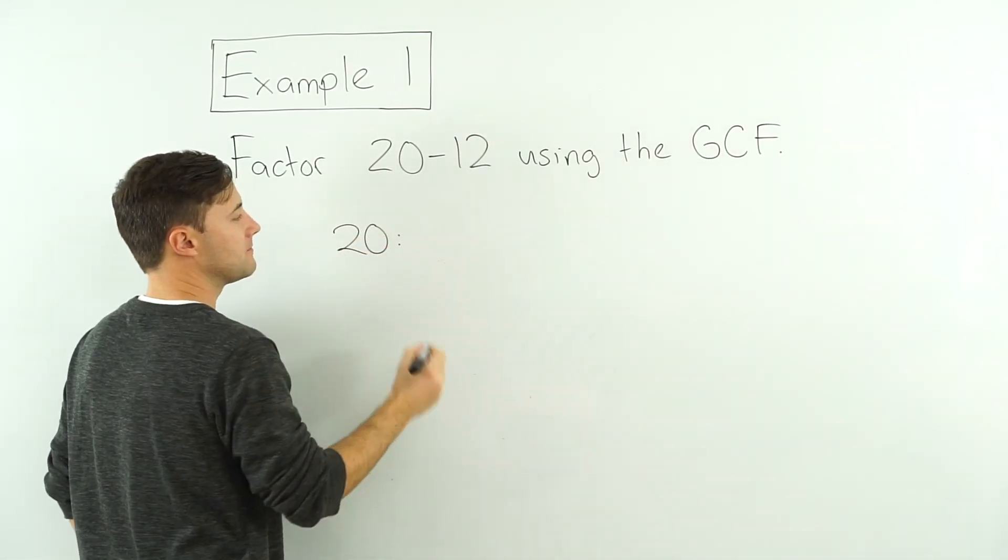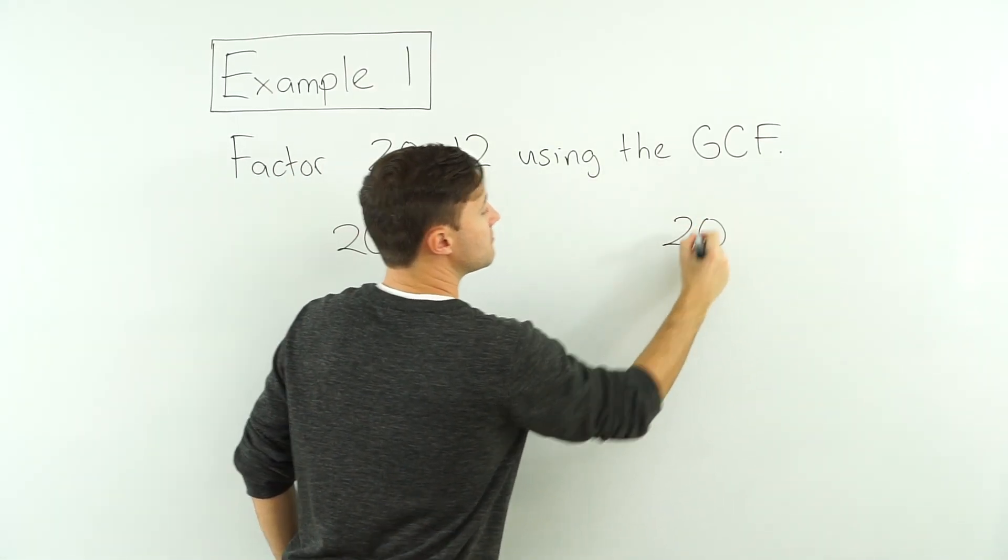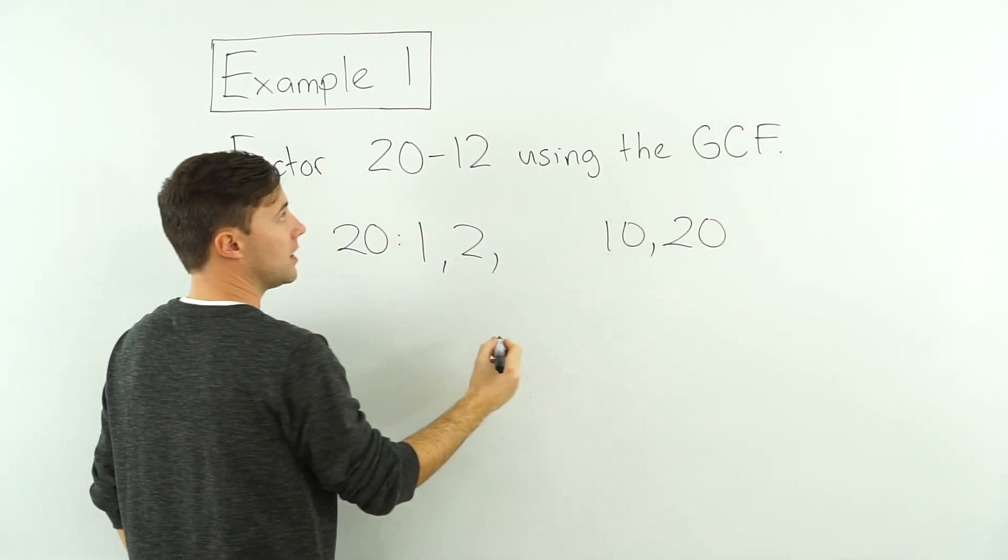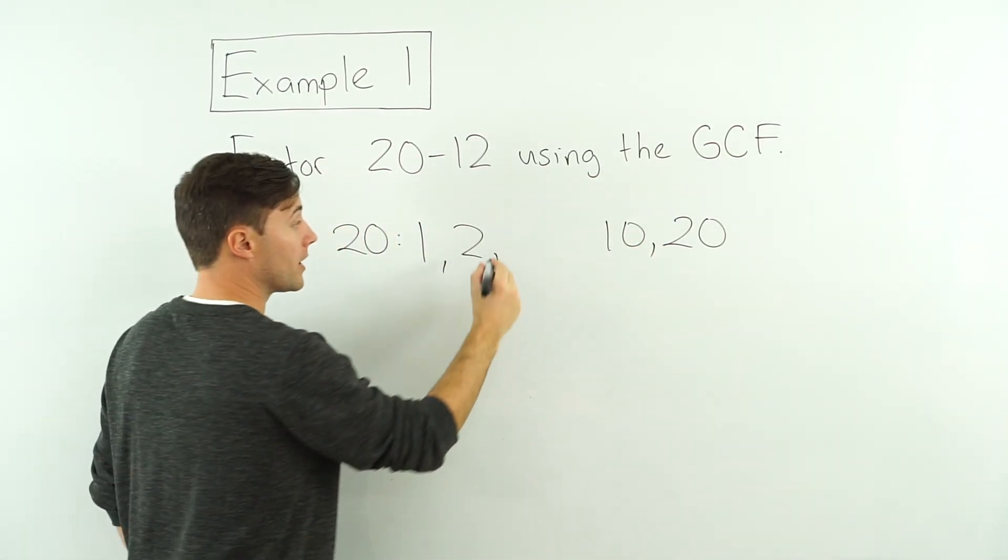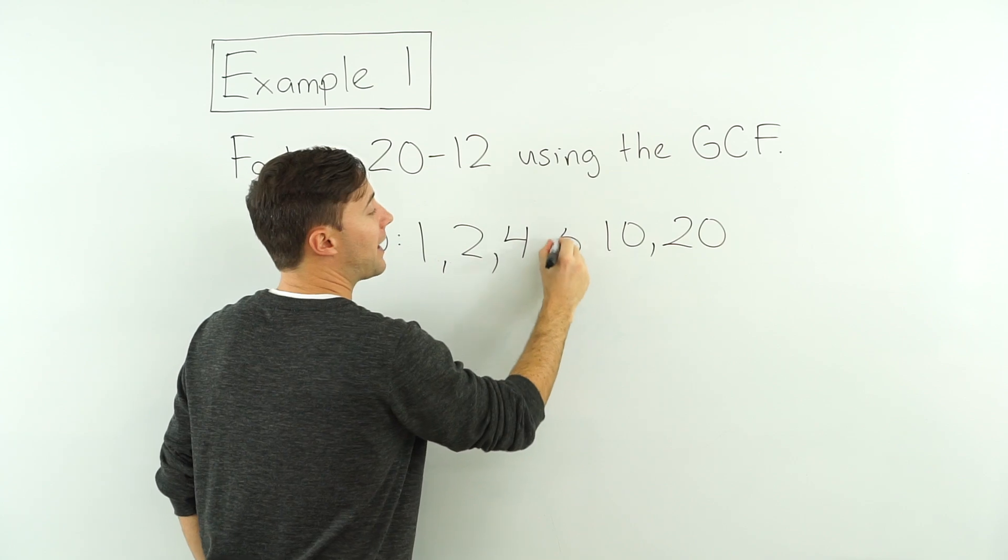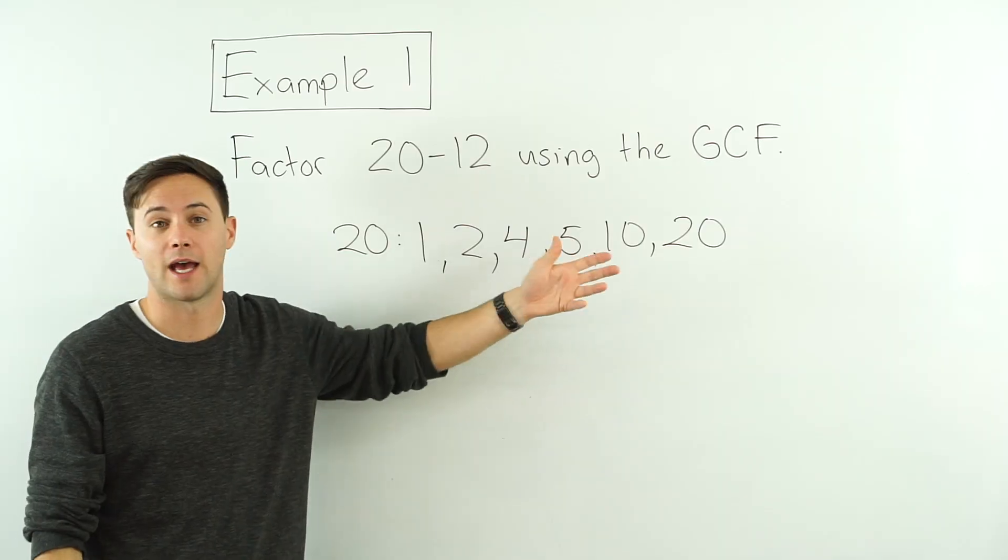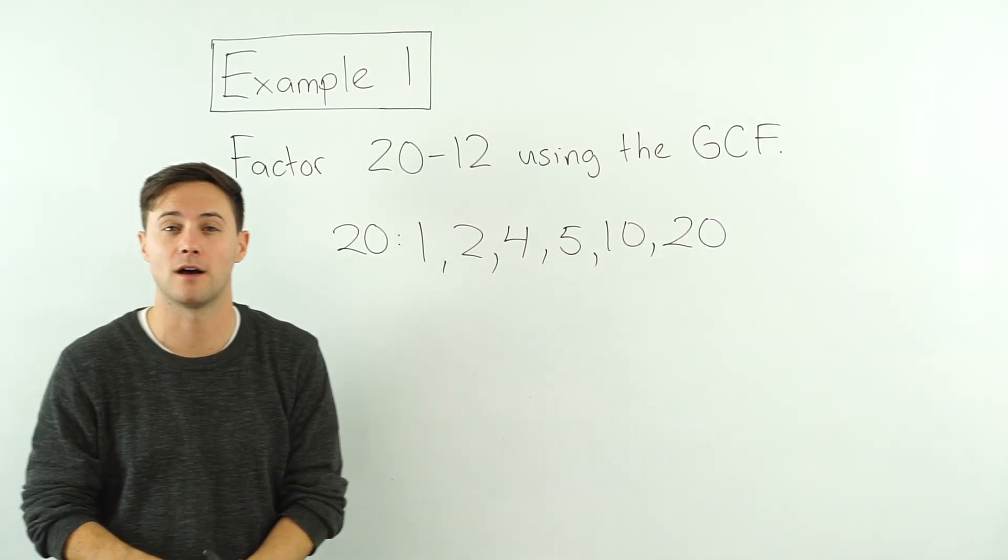Well, the factors of 20: you've got 1 and 20, you've got 2 and 10, 3 doesn't work, 4 does, 4 times 5 works, 6 no, 7 no, 8 no, 9, 10, and we're there. So there's the factors of 20.